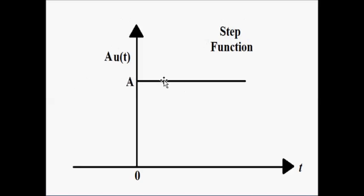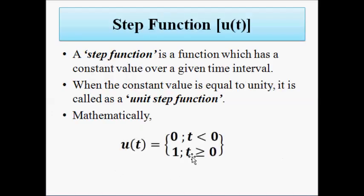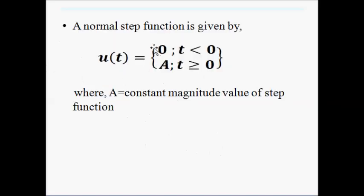If the magnitude were any other value, say 'a', it would be a normal step function. In both cases, it has a constant value for t greater than 0, and for t less than 0 it is 0 — non-existent. This mathematical expression represents the unit step function, and the other represents the normal step function.